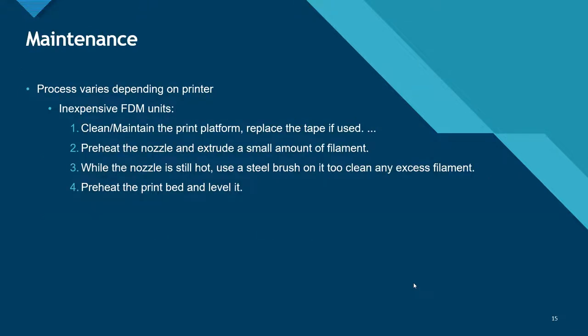Maintenance processes vary depending on the type of printer. With FDM units, the print platform needs to be cleaned and maintained before each print. The nozzle needs to be preheated and a small amount of material extruded out as waste. Often while the nozzle is still hot, a steel brush is used to clean it and keep excess filament off. Print beds need to be heated and the machine may need to be re-leveled from time to time.